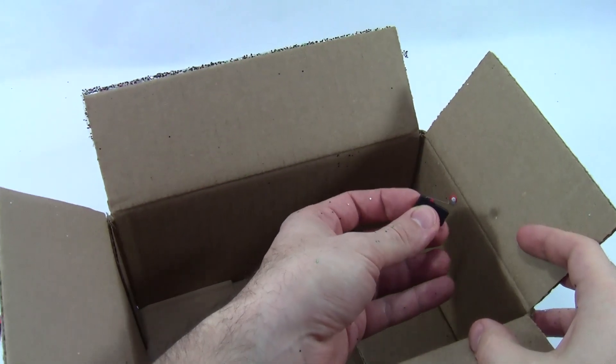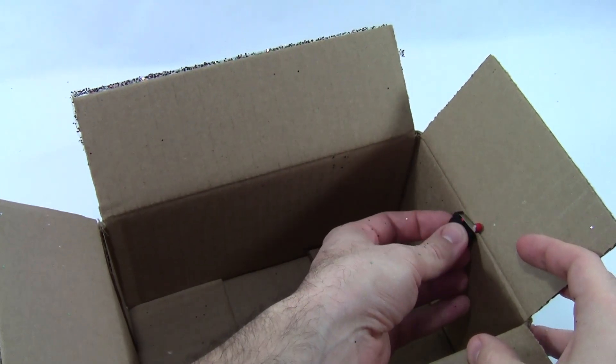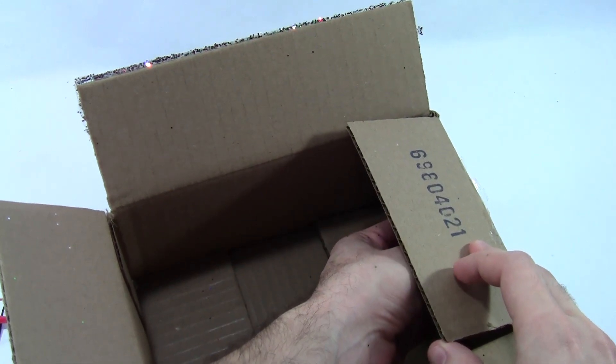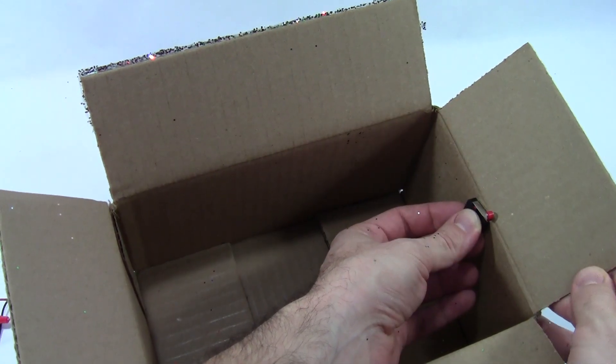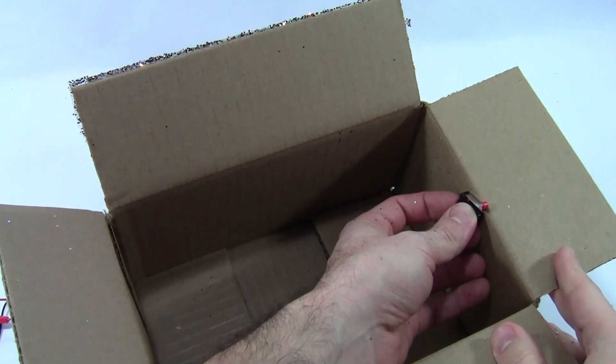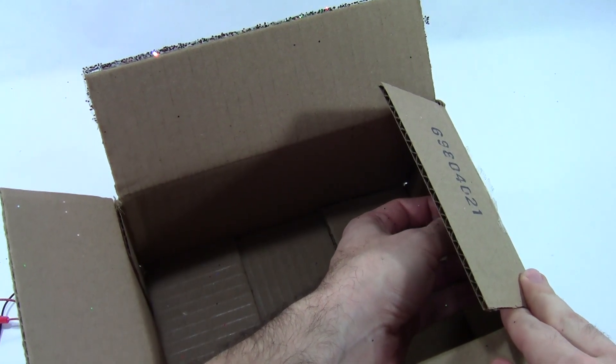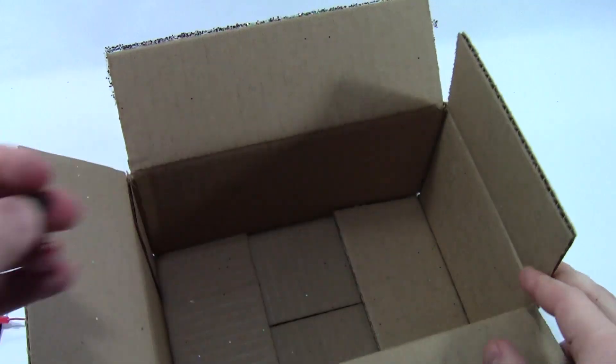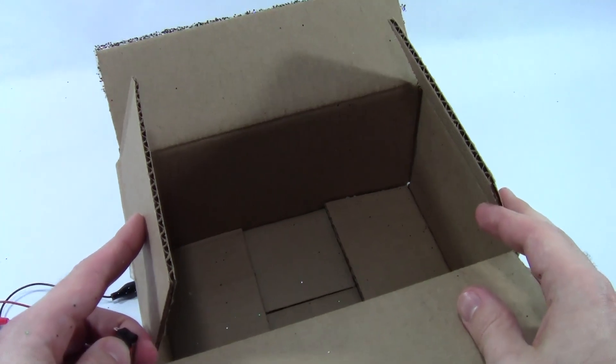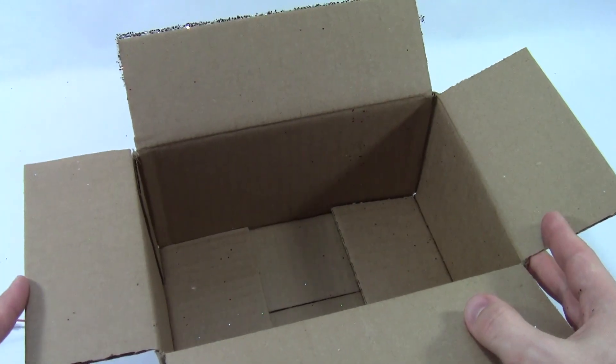Now here's the tricky part. I want to mount this switch inside the box such that the switch is depressed when the box lid is closed and doesn't release until the lid is open far enough to allow the glitter to shoot outside the box. If the switch is mounted too low and releases too early, then the motor is going to turn on too soon and the glitter will be contained by the lid of the box, which of course ruins the fun.